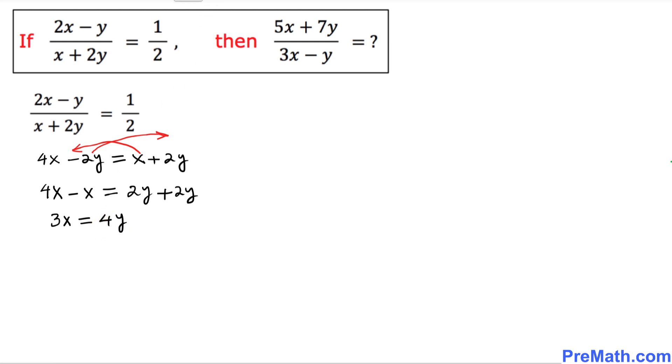Now I'll divide both sides by y, giving us 3x/y = 4. Then multiply both sides by 1/3 to get x/y = 4/3. This is the proportion we have.